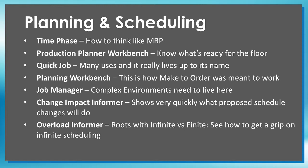Job manager — so if you have complex things you need to do: merging jobs, splitting jobs, all that fun stuff. And then the change impact informer — now we're getting into scheduling. What happens if I start playing around with a what-if version of my schedule and I want to know what the net change is — is it positive or negative? There are tools like the change impact informer that will show me exactly what I'm doing to my production system, as well as what I'm doing to my resources and the overtime load that I might need.